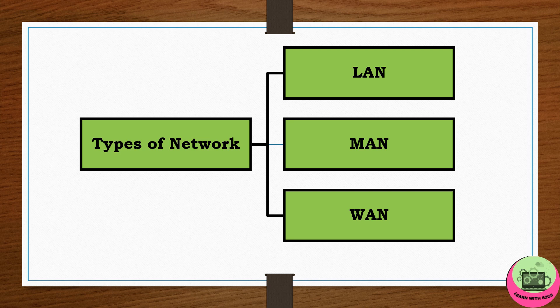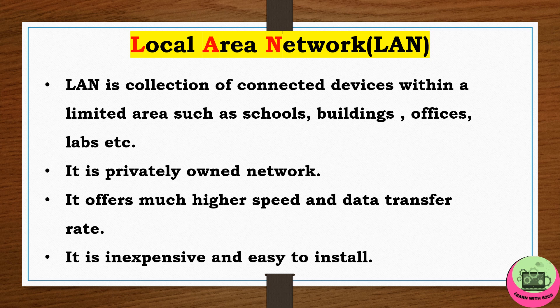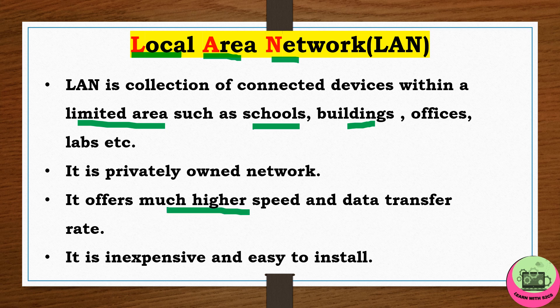Next are the types of network. Depending on coverage area and facilities provided, networks are divided into three types: LAN, MAN, and WAN. First is Local Area Network — LAN stands for Local Area Network. LAN is a collection of connected devices within a limited area such as schools, buildings, or offices. It is a privately owned network, offers much higher speed, high data transfer rate, and is inexpensive and easy to install.